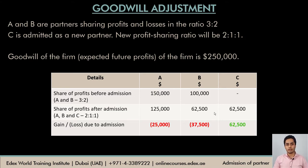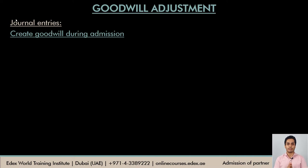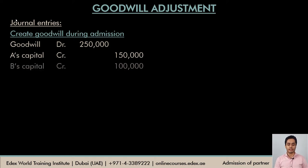You do not have to do these complicated calculations in the exam. In the exam, you pass simple accounting entries. The first entry is to create goodwill at the time of admission — debit the goodwill account. Goodwill is an intangible asset; to create an asset, debit it. So $250,000 is debited to goodwill. This goodwill belongs to the existing partners only, so it is divided in their old profit sharing ratio between A and B: $150,000 and $100,000 respectively.